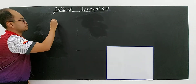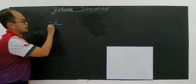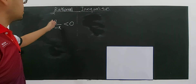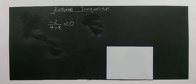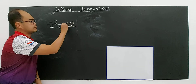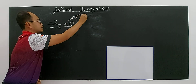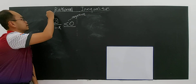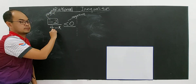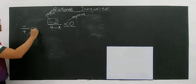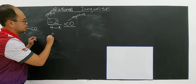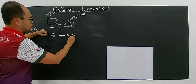Let's say you have negative 2 divided by 4 minus x, and this will be negative — less than 0. What is causing this rational function to be negative? You need to think, not look for a method. Why is it negative? The numerator negative 2 is already negative. Negative divided by positive gives negative, and negative divided by negative gives positive. So to get a result less than 0, the denominator 4 minus x must be positive.